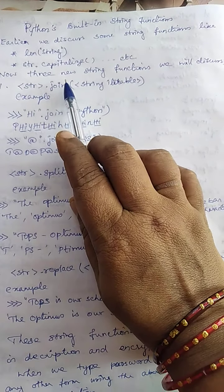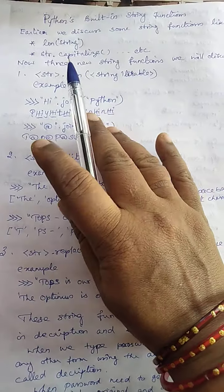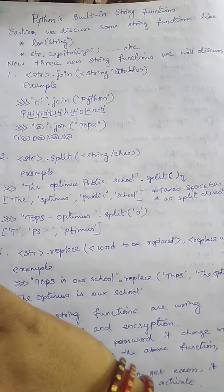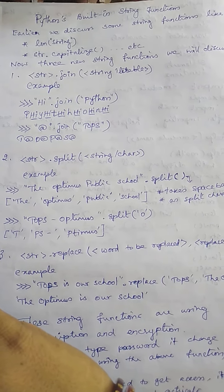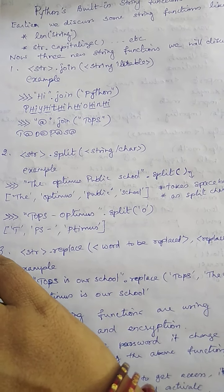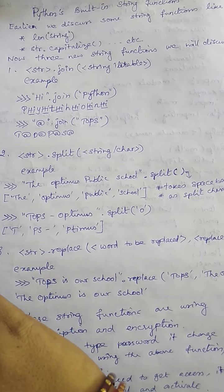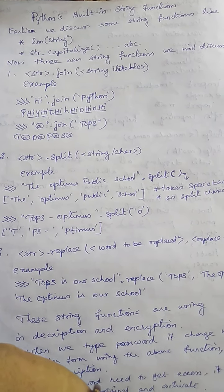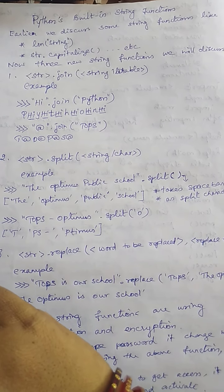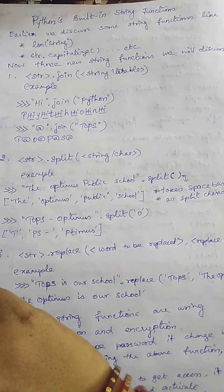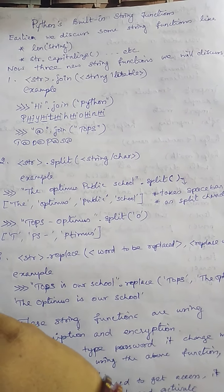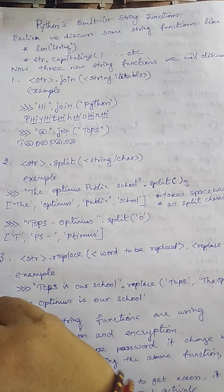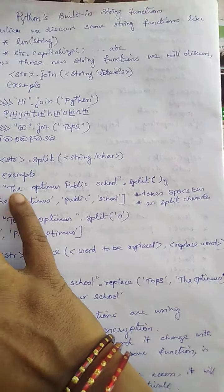Before that, I want to confirm one thing: CBSE has reduced our syllabus from the fourteenth lesson to the thirteenth lesson. The fourteenth lesson is a theory part that carries ten marks in our public board. Now these ten marks are going to be added with Boolean algebra, the networking part, and the second one is database SQL. So we are not going to study the theory part of the fourteenth lesson. Instead, we have to give more consideration to the programming part of Python as well as SQL, because the marks are going to be added only in these two parts.